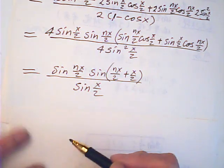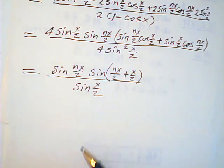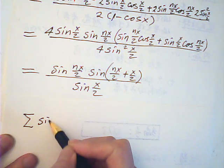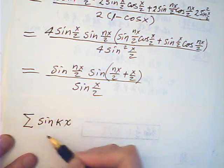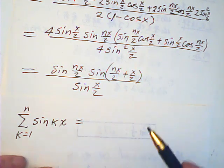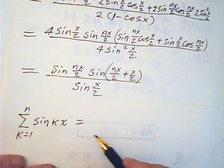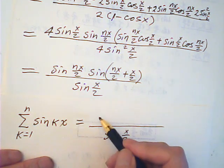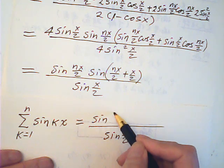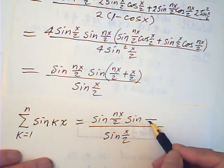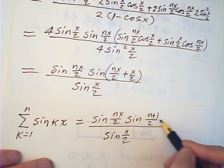So let me continue from here and write it nicely. The summation of sine kx, k from 1 to n, is equal to: sine(x/2) in the denominator, sine(nx/2) on top, times sine of (n+1)x/2.